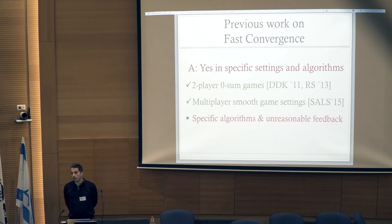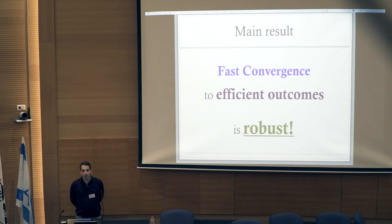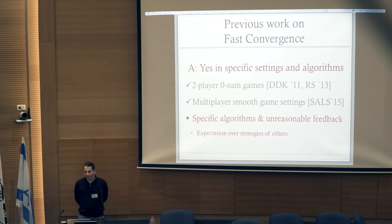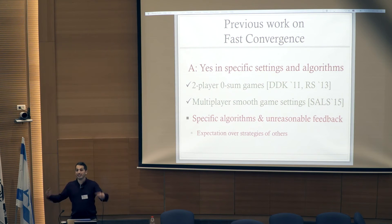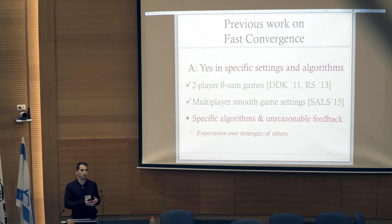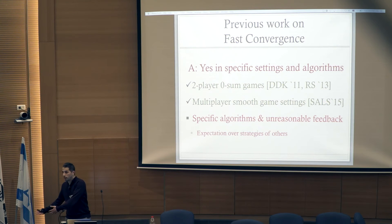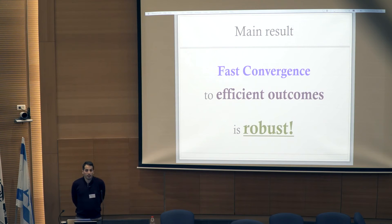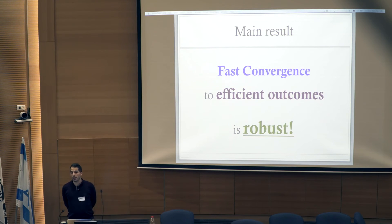However, all previous work assumed players use specific algorithms and also assumed an unreasonable form of feedback — access to expected utilities taking expectations over the mixed strategies of all other players. This is unrealistic due to information issues (you need to know others' mixed strategies) and computational issues. The main result of this work is that fast convergence to efficient outcomes is robust: it holds for a broad range of algorithms with more realistic feedback.